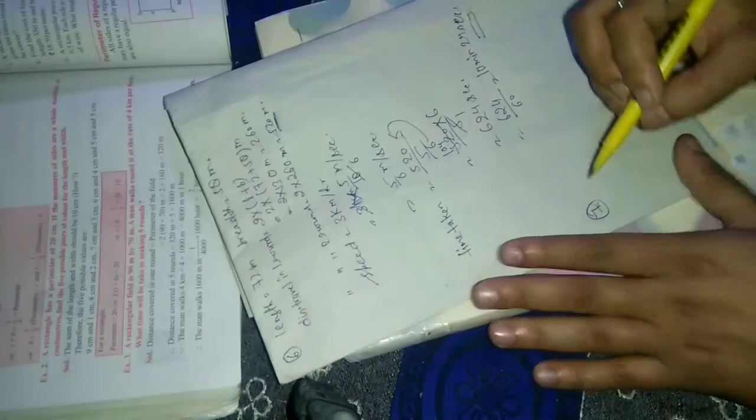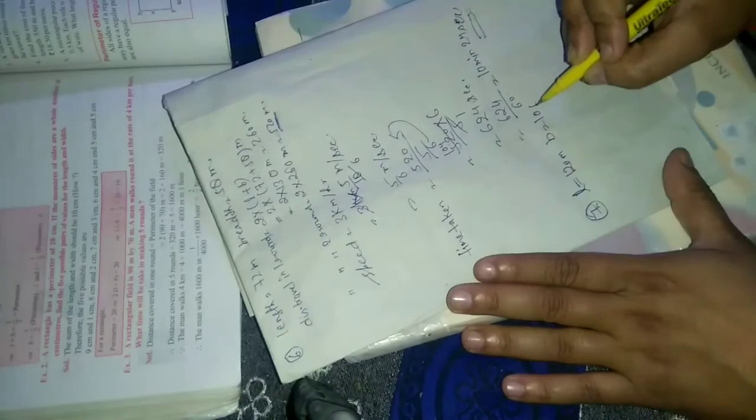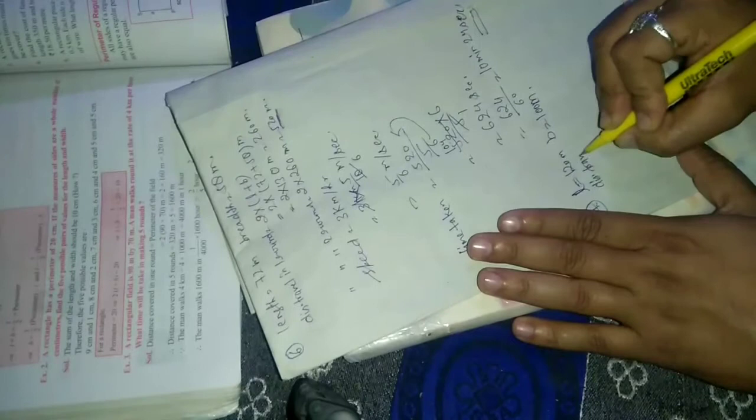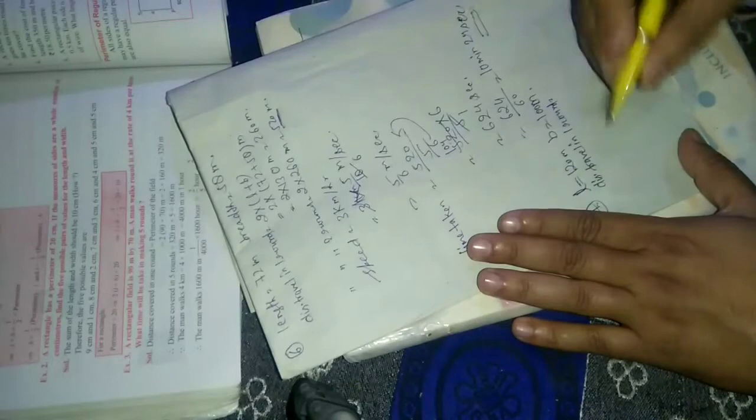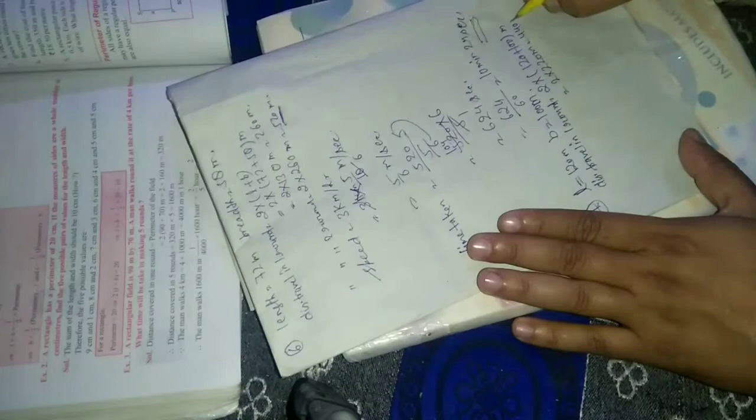Question number 7. A rectangular garden is 120 meter by 100 meter. How many rounds of this garden will he make if he covers 2200 meters? Question number 7, a rectangular garden is 120 meter by 100 meters. Length is 120 meter, breadth is 100 meter. He covers 2200 meter distance. How many rounds? Distance traveled in one round equal to perimeter of garden. Perimeter equals 2 into length, 2 into 120 plus breadth 100 meter.